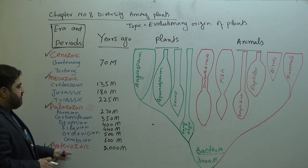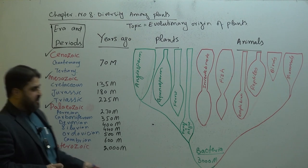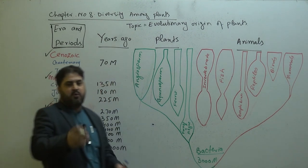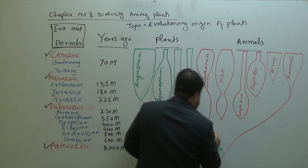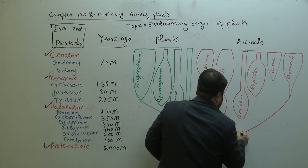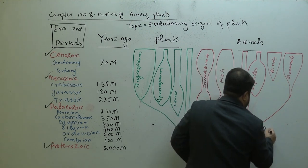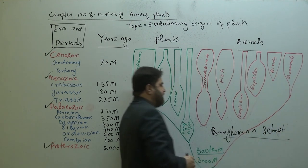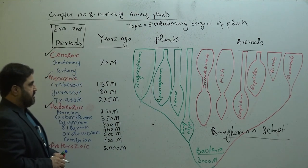Life started in the Proterozoic era, about 3 billion years ago, with bacteria. This was confirmed by Barg, Hoorn, and Scott, who confirmed the existence of bacteria dominating on Earth at that time.